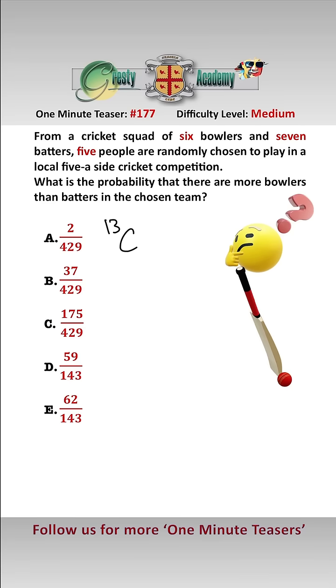With no restrictions there are 13C5 ways of picking five people from the squad of 13 which equals 1287.